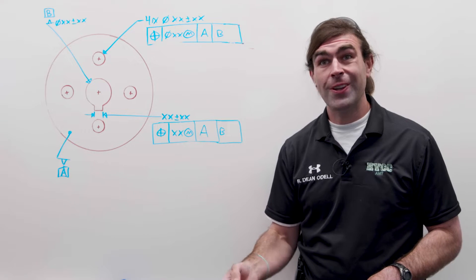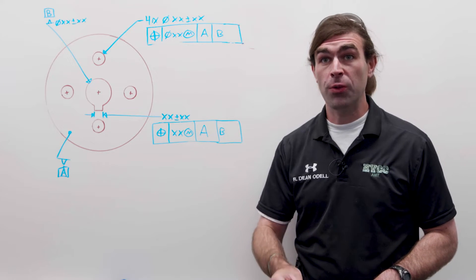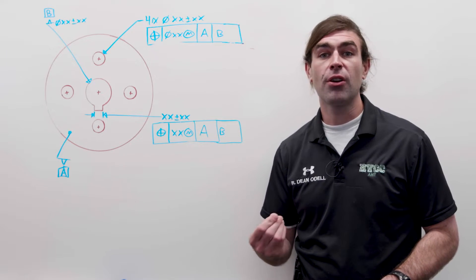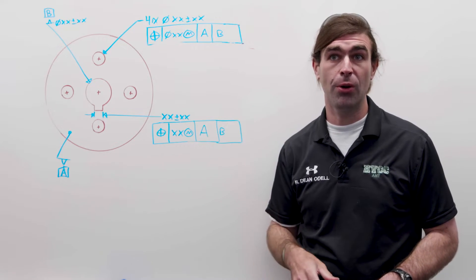If they're all at regardless of material boundary, you cannot invoke separate requirements. You can only use the separate requirements if at least one of the datum references is called out at MMB. So it has the little MMC symbol in there.